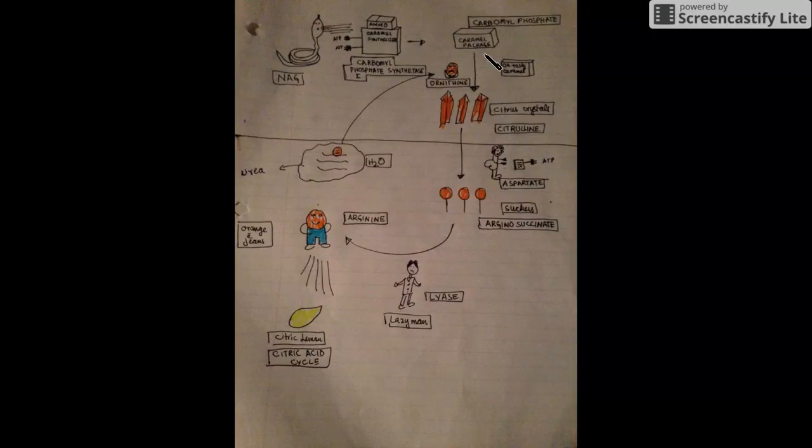And N-acetylglutamate is an obligate activator of this reaction. Like if you don't have N-acetylglutamate, you cannot start this reaction. So first step is ammonium shown by the ammo box, two ATPs shown by the two switches.